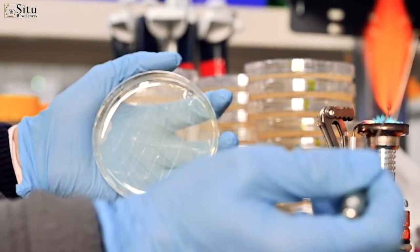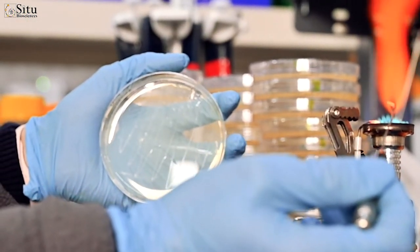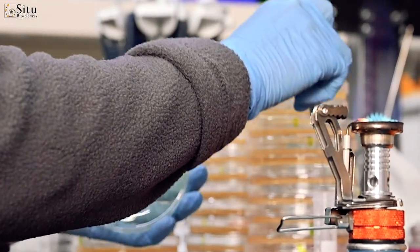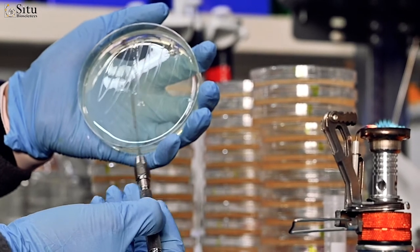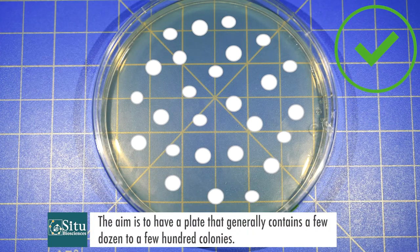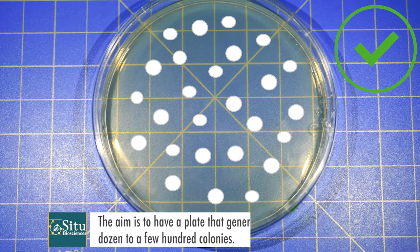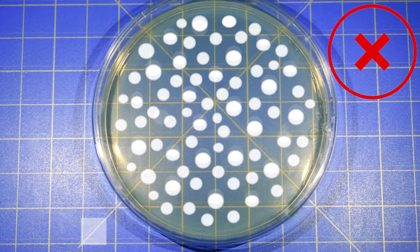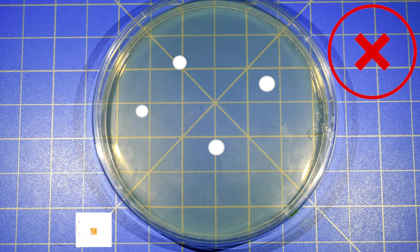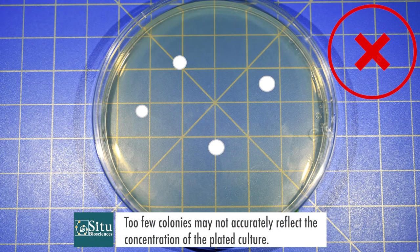Let's break that down a bit more. Often, when determining the concentration of a bacterial culture by standard plating, dilutions of the culture are plated and incubated to allow colonies to form. The aim is to have a plate that generally contains a few dozen to a few hundred colonies. More than a few hundred would be difficult to count due to overcrowding, which reduces the ability to differentiate one colony from another. On the other hand, too few colonies may not accurately reflect the concentration of the plated culture.